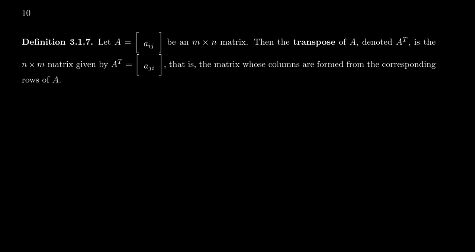The transpose is going to swap the roles of columns and rows. The rows of A are going to become the columns of A transpose, and the columns of A are going to become the rows of A transpose. So rows and columns are going to swap around.